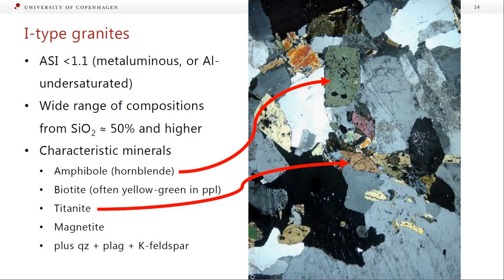I-type granites are defined as having an alumina saturation index of less than 1.1 — they're metaluminous or aluminium under-saturated, so we don't need extra aluminium-rich phases. These have a really wide range of compositions, starting with a silica content of about 50% and going all the way up to quite evolved granites. The characteristic minerals are amphibole (hornblende, which might be green), biotite that is often yellow-green rather than the red-brown to yellow you're used to, titanite, magnetite, and of course quartz, K-feldspar, and plagioclase.